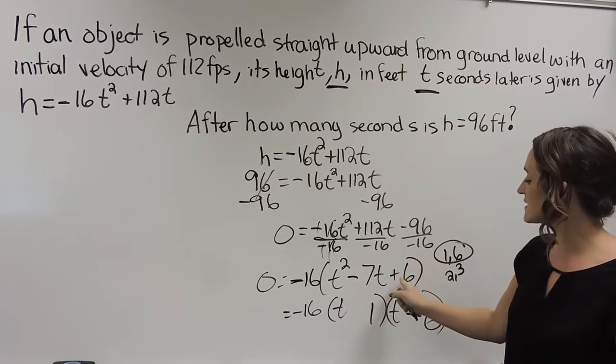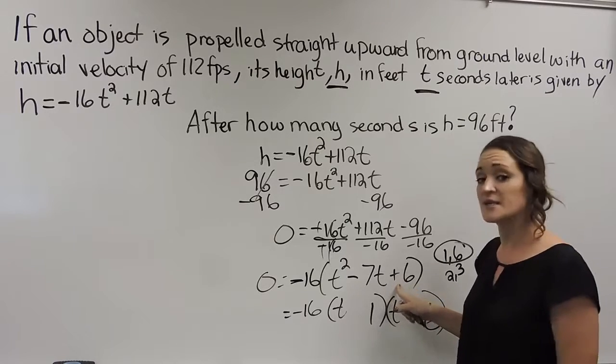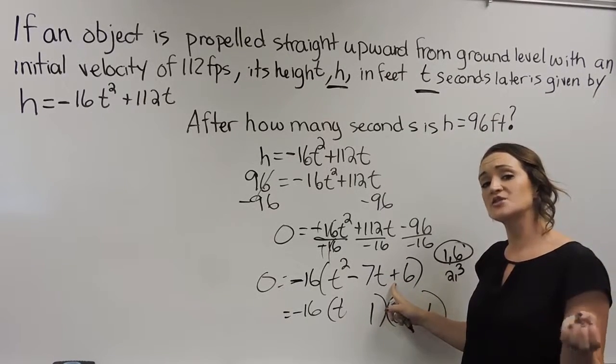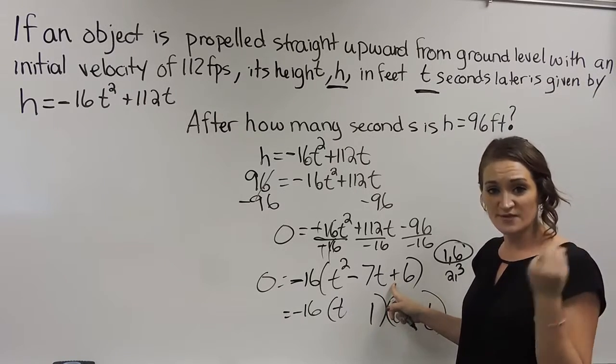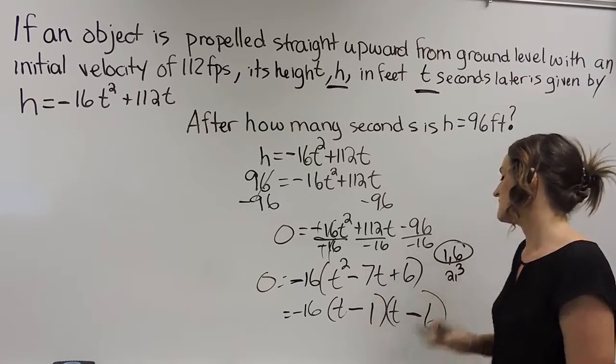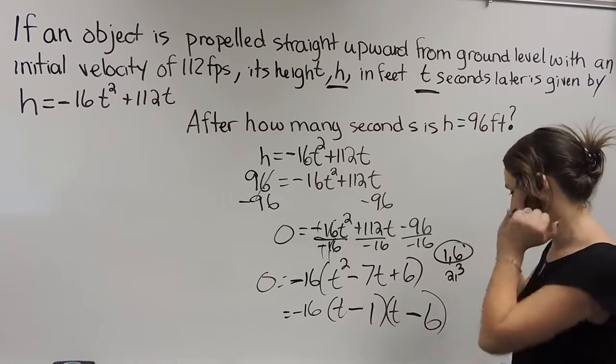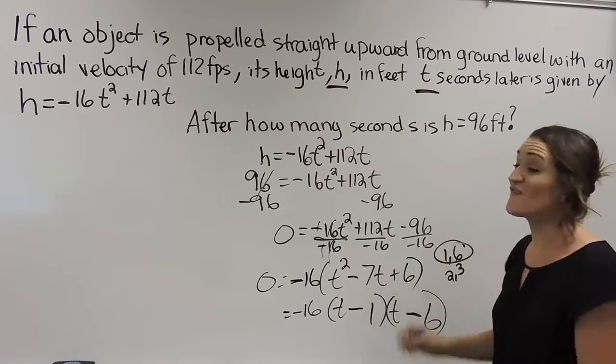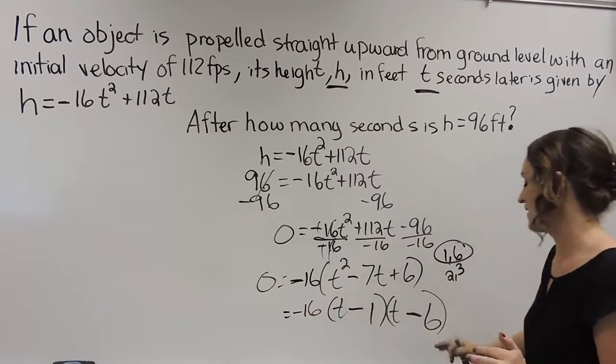And because this last term over here is positive, the only way to get a positive in multiplication is with same signs. Same signs positive, different signs negative. So because this is positive, that tells me these have to have the same sign. So this is my factored quadratic equation over here.